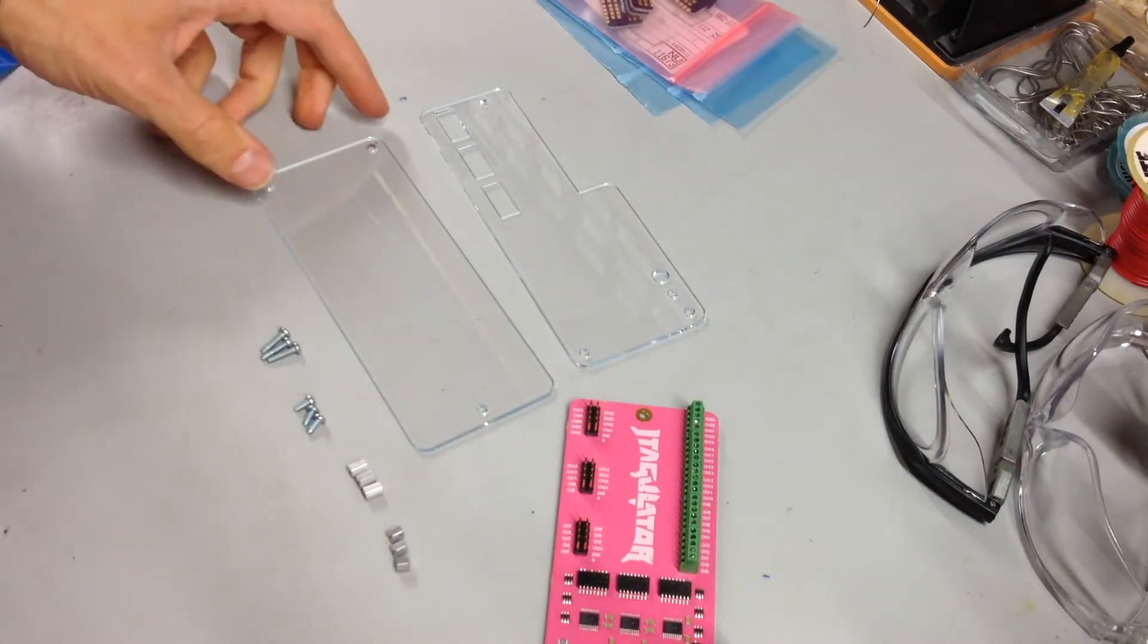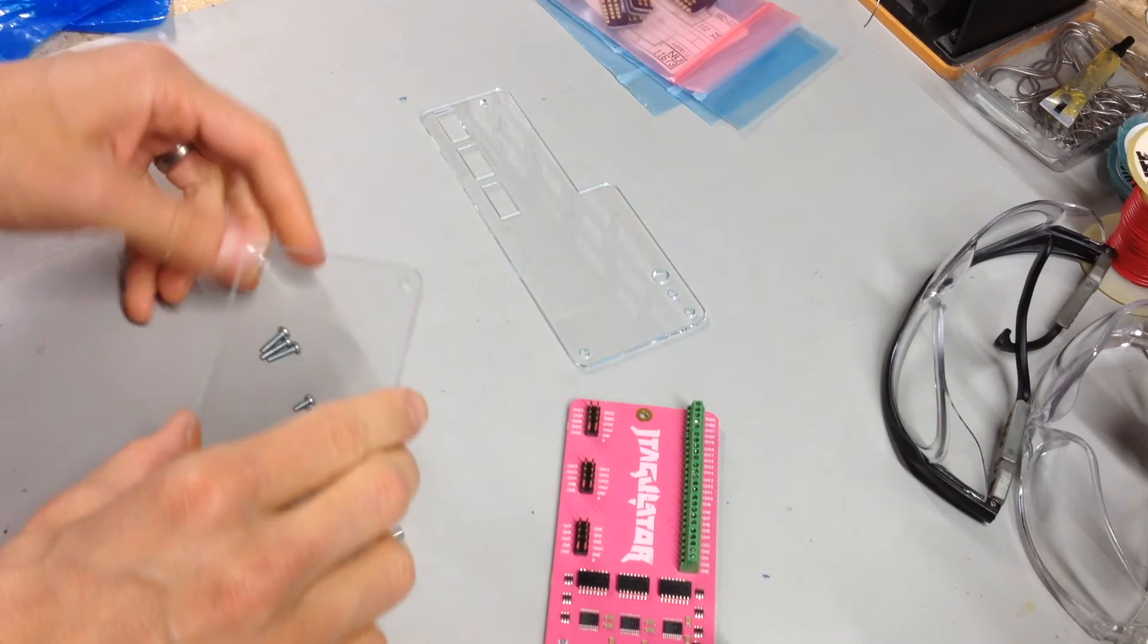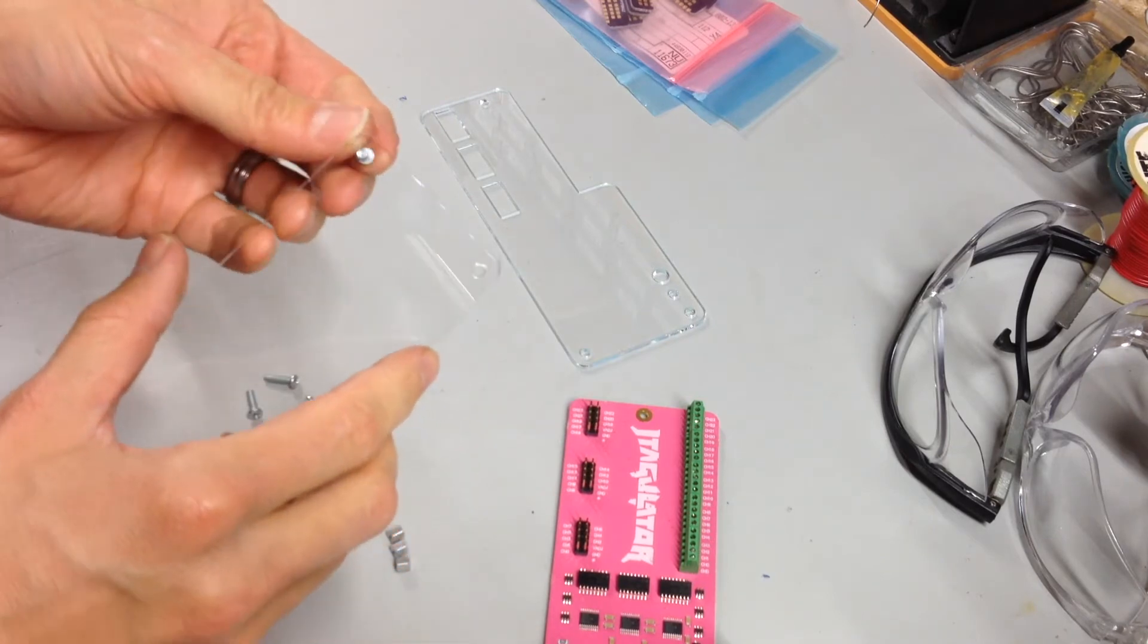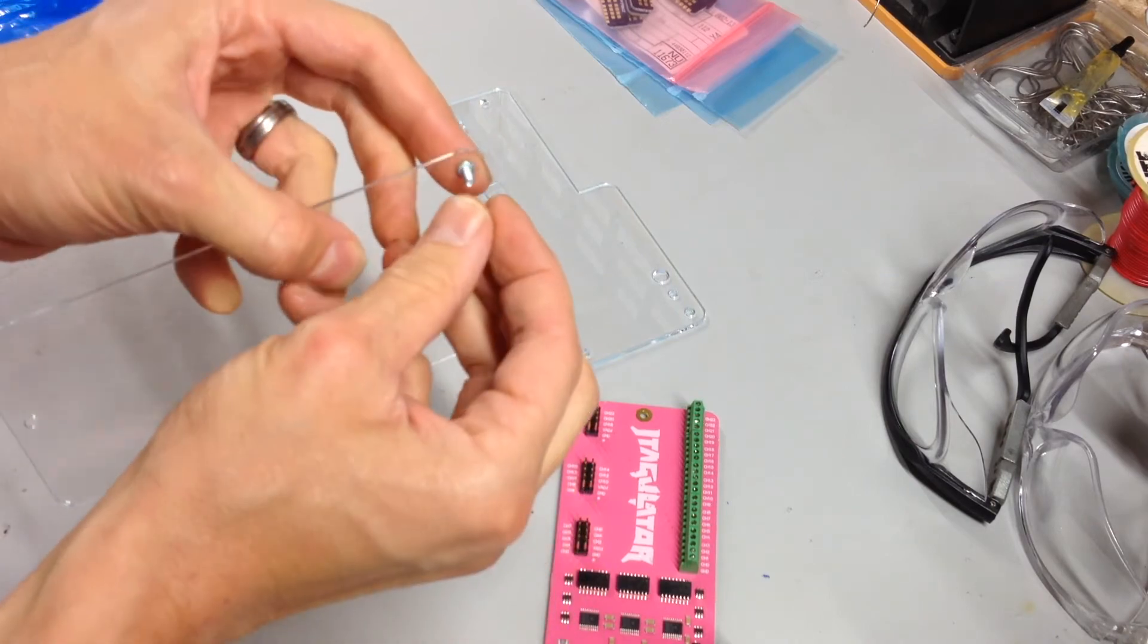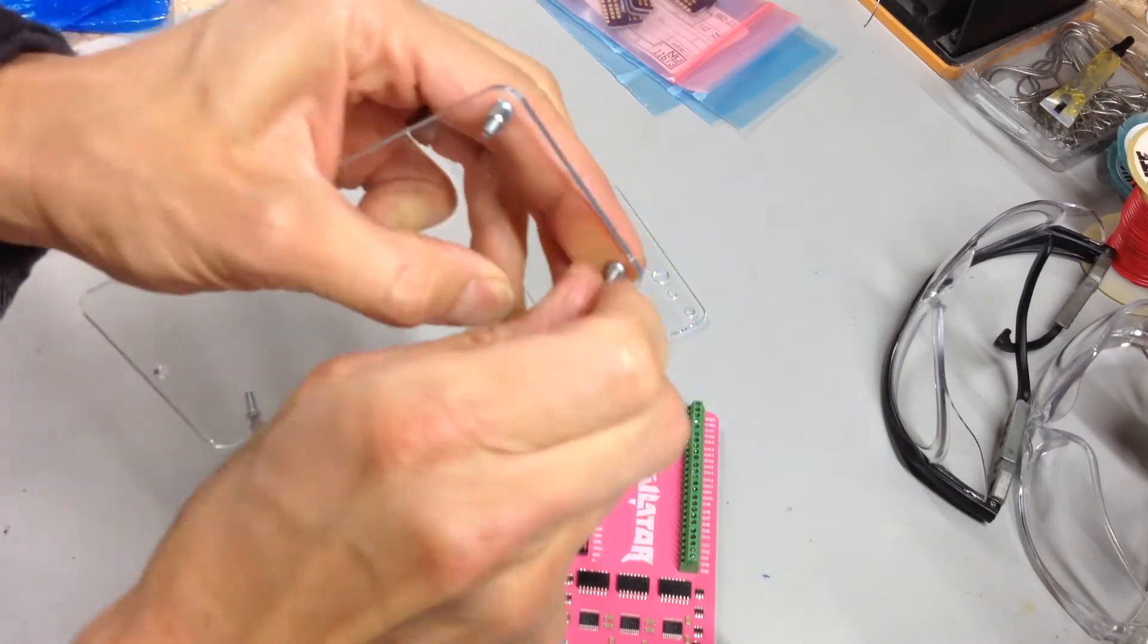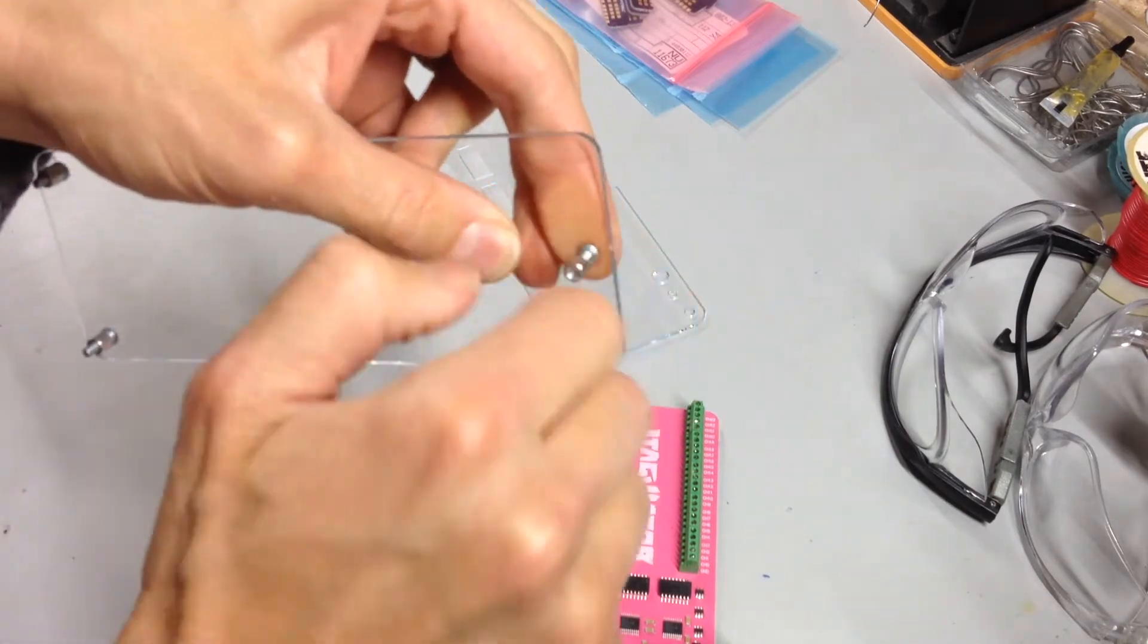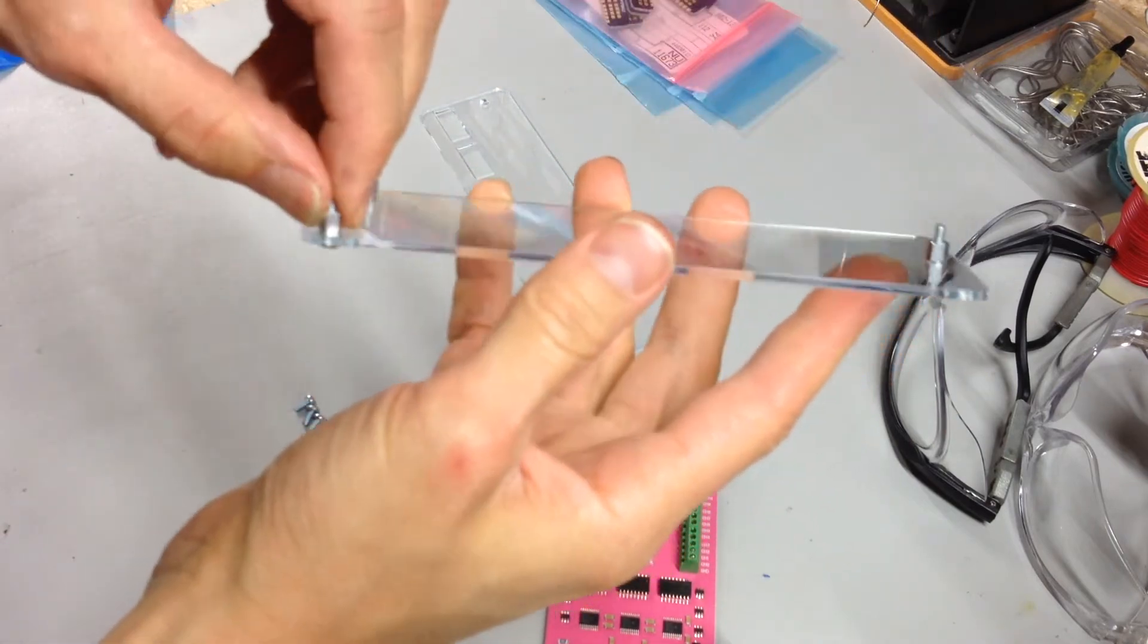Next, we're going to assemble the screws and standoffs to the bottom piece, so we take our 7/16th inch screws and hold that in place, and then use our 3/16th hex spacer, and just thread those on. You're going to want to screw these on pretty tight, just be careful to not crack the acrylic.